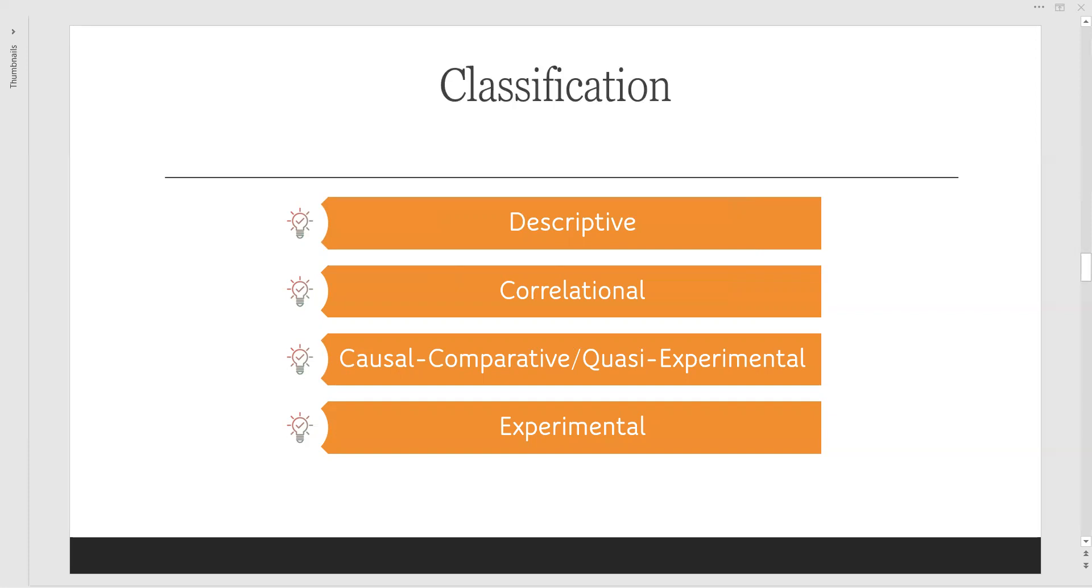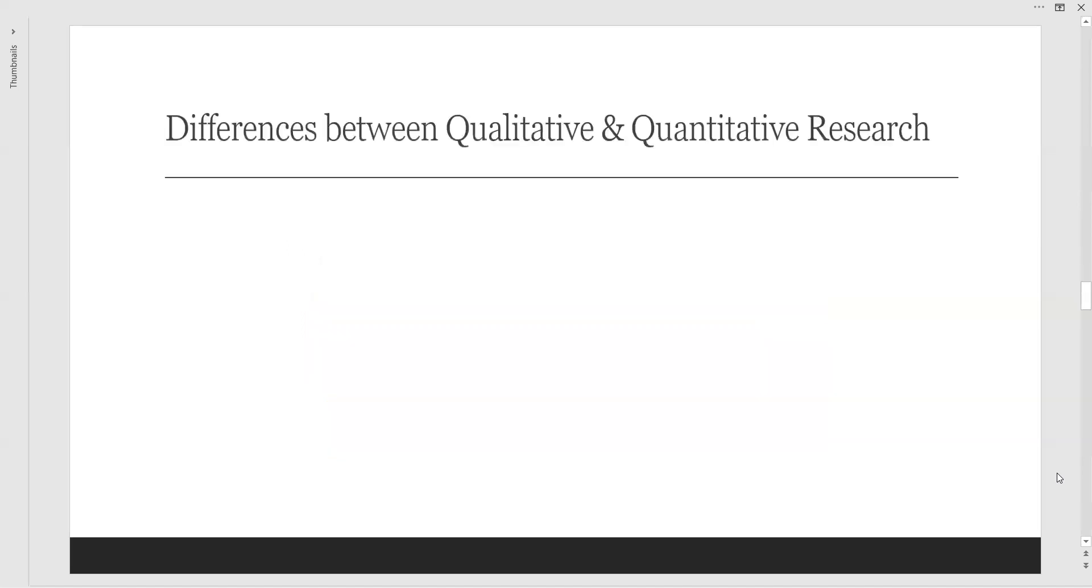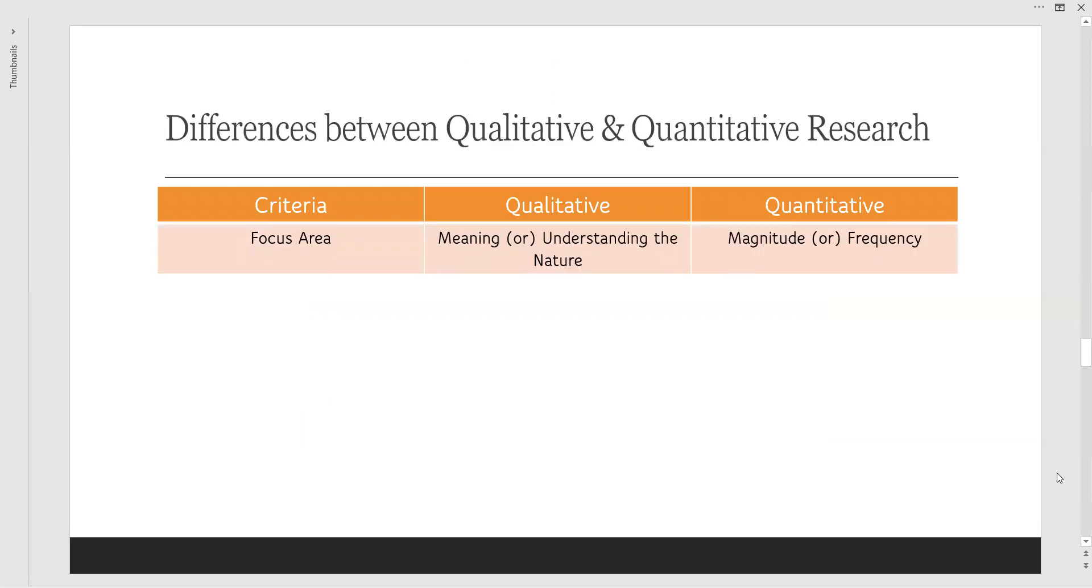This is the simple classification of these methods. Next comes along the differences between qualitative and quantitative research. Let us discuss these things with criteria one by one. Very first, the focus area. The focus area for qualitative methods is mainly meaning or understanding the nature, how the particular data works, whereas in quantitative it purely depends upon magnitude or frequency.